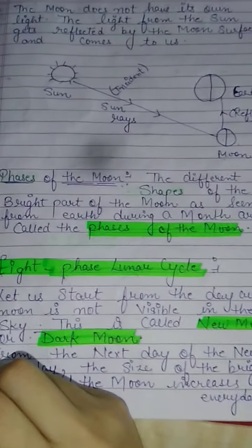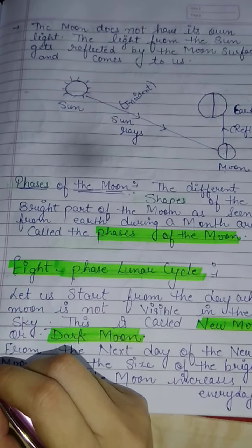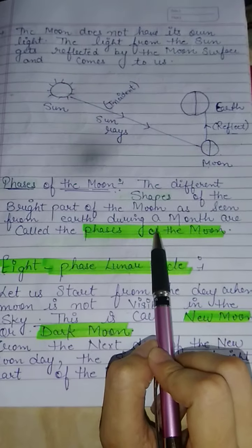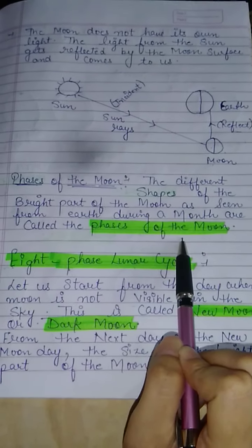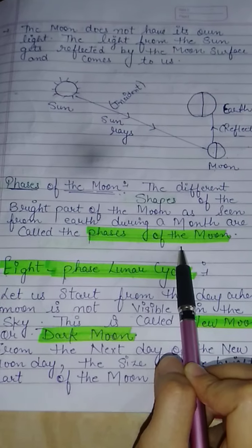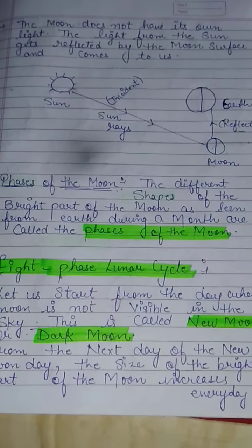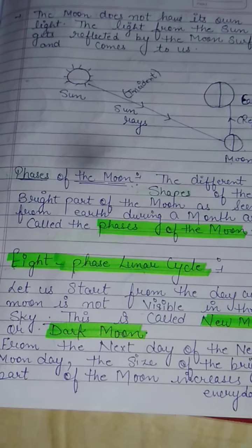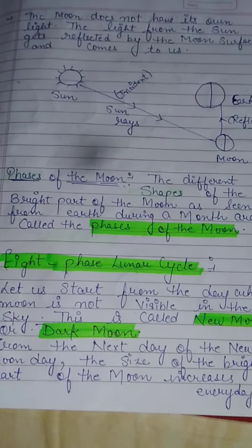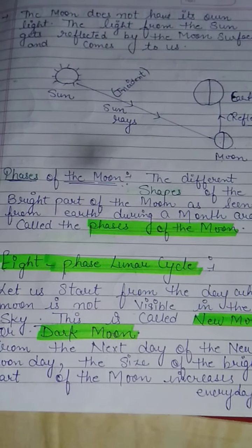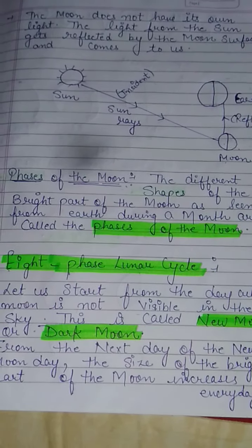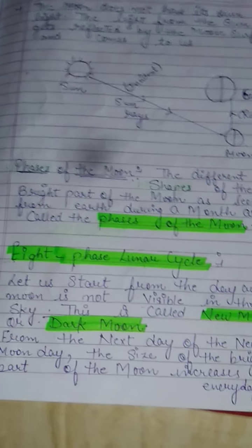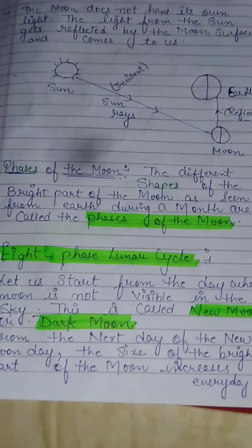The different shapes of the bright part of the Moon as seen from Earth during a month are called the phases of the Moon. If we observe daily during the month, we observe the Moon's different shapes. We will study these phases of the Moon.